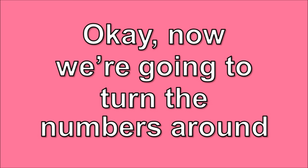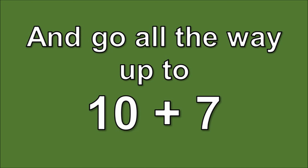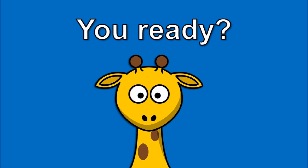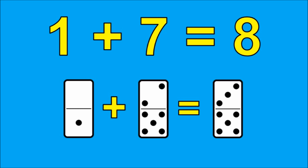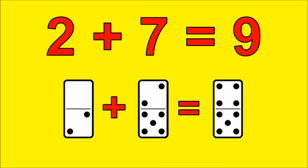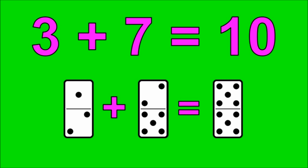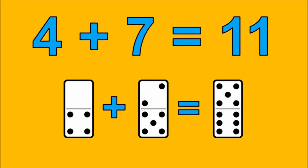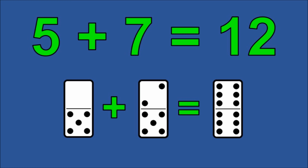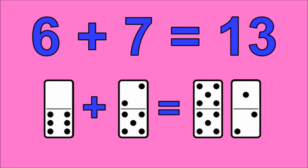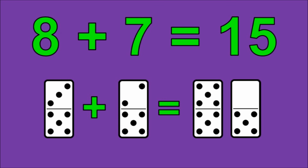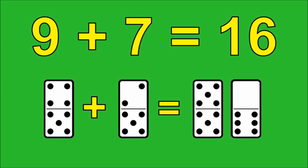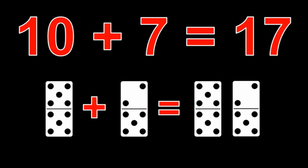Great job, kids. Now we're going to turn the numbers around. We're going to start with zero plus seven, go all the way up to ten plus seven. Ready? Let's do it. Zero plus seven is seven. One plus seven is eight. Two plus seven is nine. Three plus seven is ten. Four plus seven is eleven. Five plus seven is twelve. Six plus seven is thirteen. Seven plus seven is fourteen. Eight plus seven is fifteen. Nine plus seven is sixteen. Ten plus seven is seventeen.